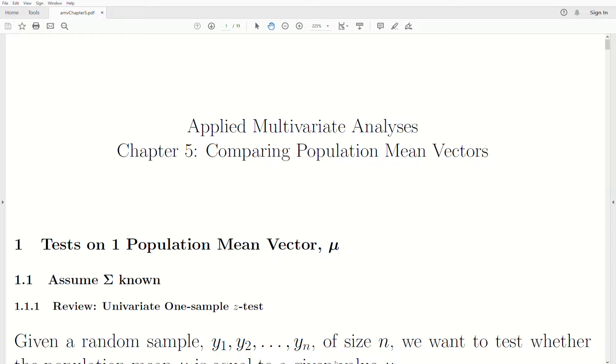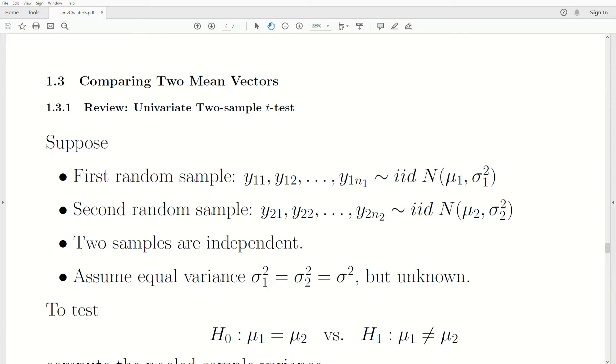Hello, this is the next video in a playlist that I'm calling Applied Multivariate Analysis. We're in Chapter 5, which we're calling Comparing Population Mean Vectors. Let's jump to today's topic, which is comparing two mean vectors.